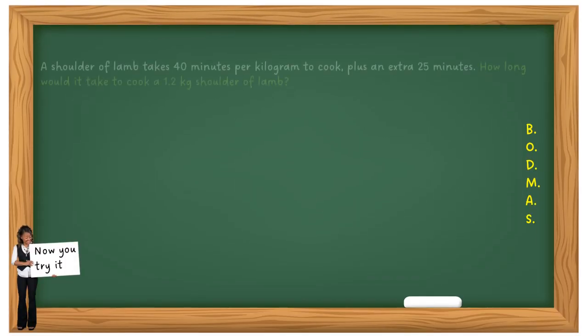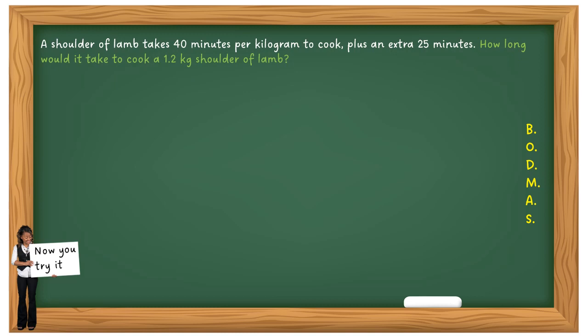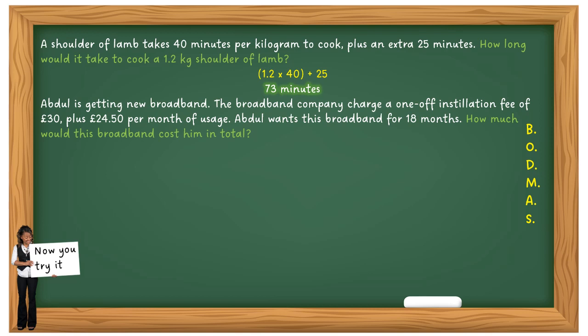Now you try it. A shoulder of lamb takes 40 minutes per kilogram to cook, plus an extra 25 minutes. How long to cook a 1.2 kg shoulder? Your BODMAS formula: 1.2 times 40, then add 25 — the answer is 73 minutes. Next: Abdul is getting broadband. The company charges a one-off installation fee of £30 plus £24.50 per month. Abdul wants it for 18 months — your fixed fee is £30 plus £24.50 times 18, giving £471.